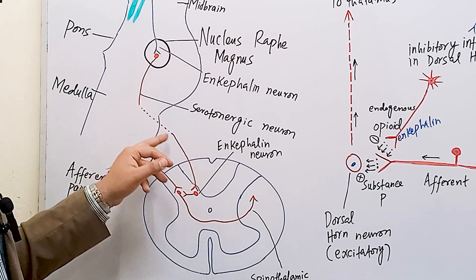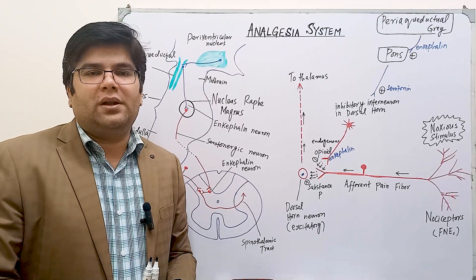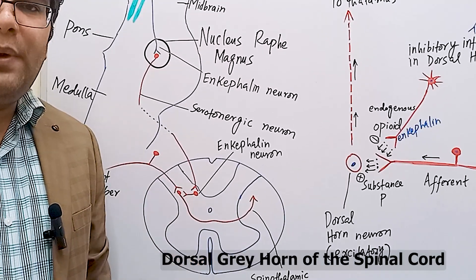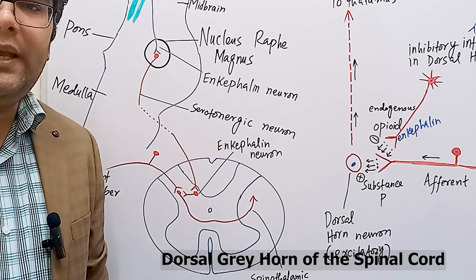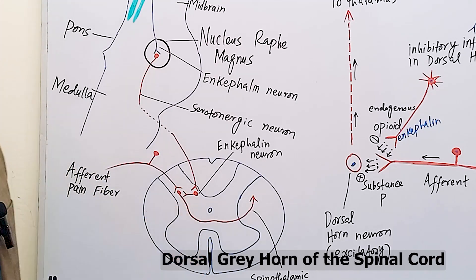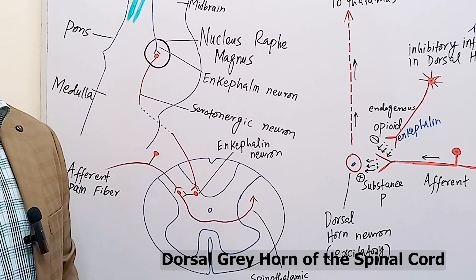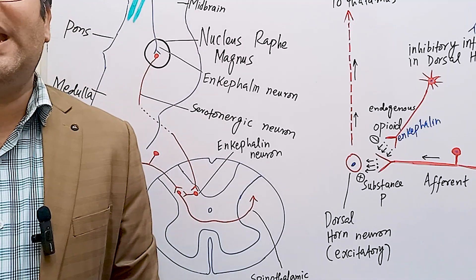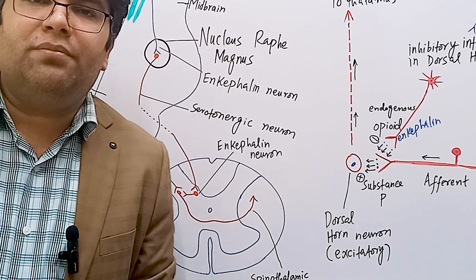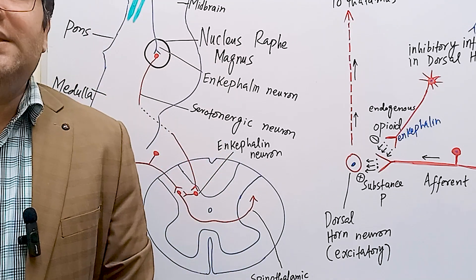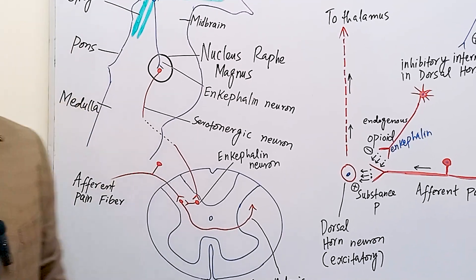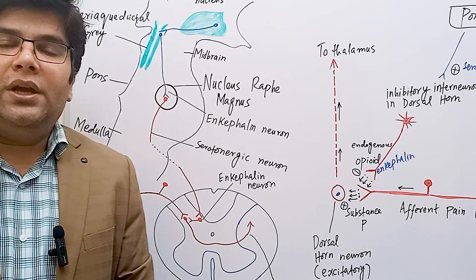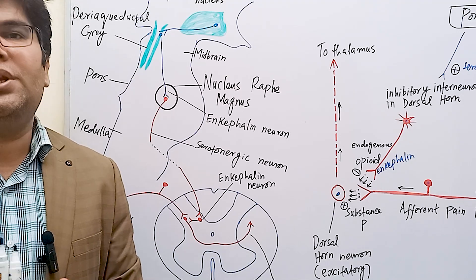These serotonergic neurons act upon interneurons present in the dorsal gray horn of the spinal cord. The third-order neurons are the interneurons of the dorsal gray horn; these neurons release enkephalin and have an inhibitory effect on the afferent pain nerve fibers, which are type C and A-delta nerve fibers. Another nucleus, the nucleus reticularis paragigantocellularis, is also present on the lateral sides of the medulla and is also part of the analgesia system. Electrical stimulation of the periaqueductal nucleus and nucleus raphe magnus causes extensive pain suppression in the body.